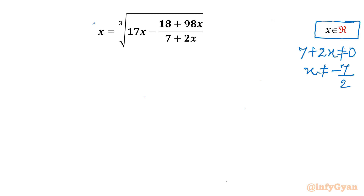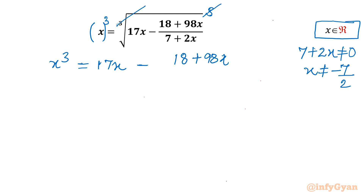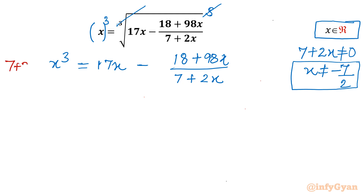Now I will consider cubing both sides. Once we cube both sides, the cube root and cube cancel out. So we can write x cubed equals 17x minus 18 plus 98x divided by 7 plus 2x. Since x is not equal to minus 7 over 2, I can multiply this equation by 7 plus 2x.